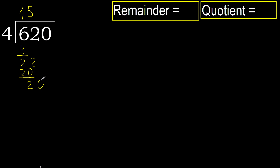20 is not greater, so subtract: 22 minus 20 equals 2. Next, bring down the 0: 20. 4 multiplied by 5 is 20, which is not greater. 20 minus 20 equals 0.